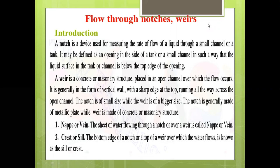First, the introduction. A notch is a device used for measuring the rate of flow of liquid through a small channel or a tank. It may be defined as an opening in the side of a tank or small channel such that the liquid surface is below the top edge of the opening. A weir is a concrete or masonry structure placed in an open channel over which the flow occurs. It is generally in the form of a vertical wall with a sharp edge at the top running all the way across the open channel. The notch is of small size while the weir is of bigger size. The notch is generally made of metallic plate while the weir is made of concrete or masonry.